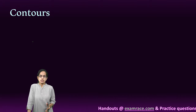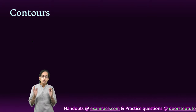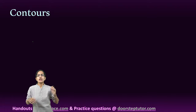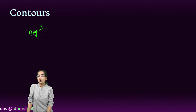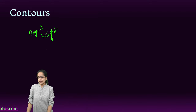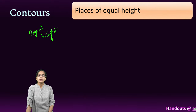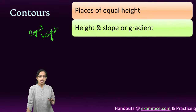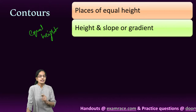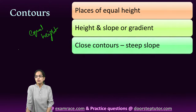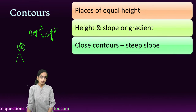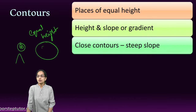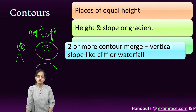Contours are imaginary lines joining places of equal height, but they also explain slope. If contours are too close to one another, a steep slope would be seen. However, if contours are far apart, there is a gentler slope. Sometimes two or more contours merge — they cannot intersect, but they can merge.